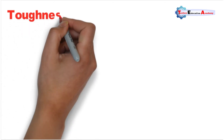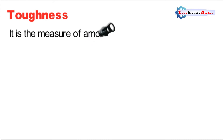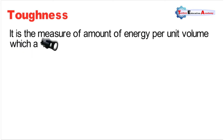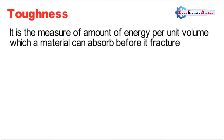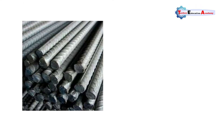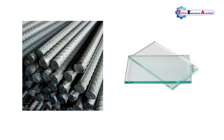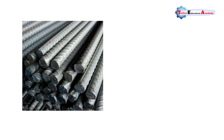The next property is toughness. Toughness is the measure of the amount of energy per unit volume which a material can absorb before it fractures. For example, when a load is suddenly applied, mild steel will absorb much more energy before fracture compared to glass — hence mild steel is much tougher than glass. Toughness is a highly desirable property for structures and machine parts which have to withstand shocks and vibrations.